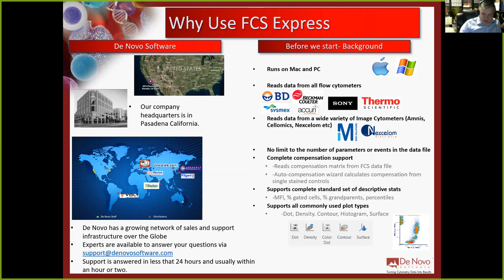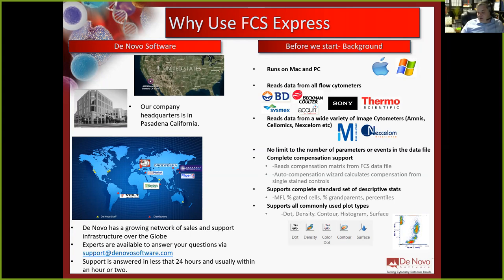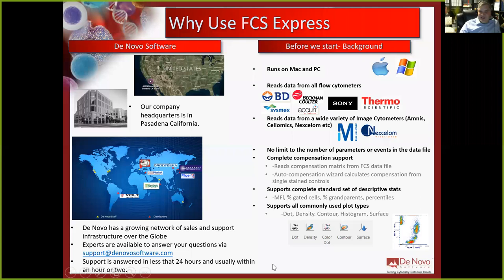We have all standard descriptive statistics and all commonly used plot types. If you're coming from another software, keep in mind there might be some translations — if you used FlowJo and loved zebra plots and don't see a button in FCS Express for zebra plots, don't assume it's not there. We just call it a density plot or a contour plot with black-and-white stripes. Maybe not as cool a name, but that visualization is there.